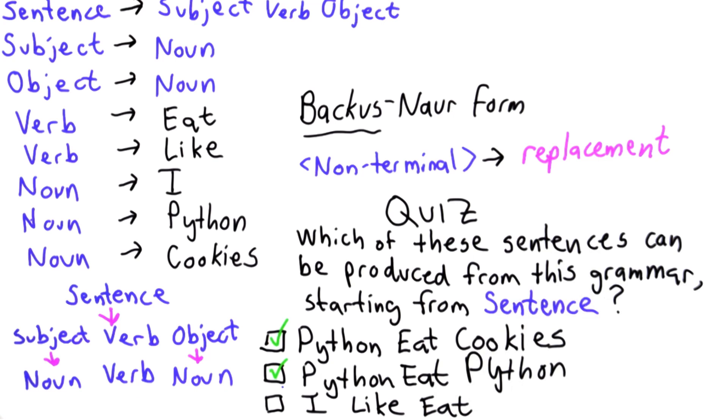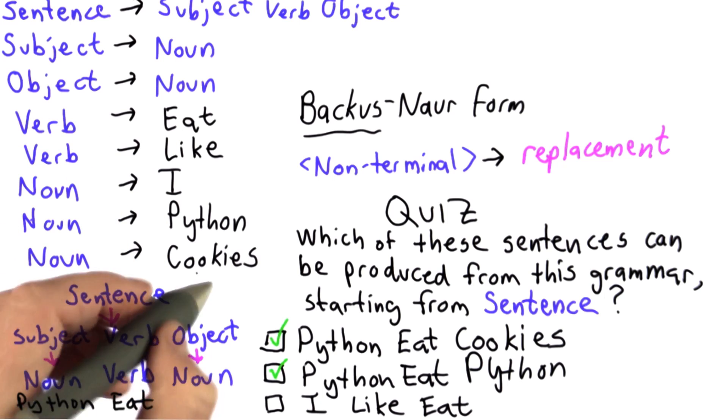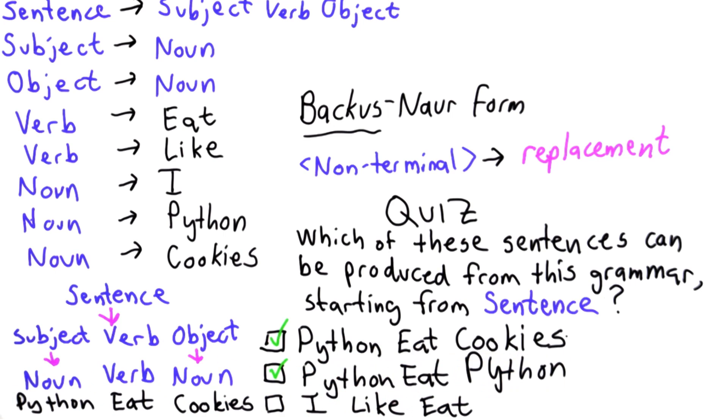From here, we have lots of choices. We can replace the noun with Python, we can replace the verb with eat, and we can replace the second noun with cookies. That will derive the first sentence.